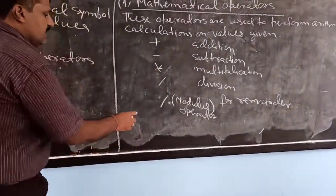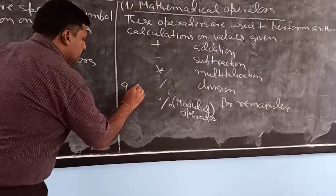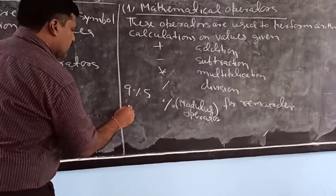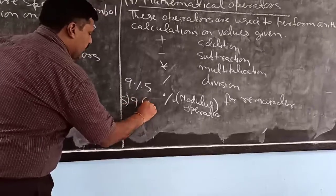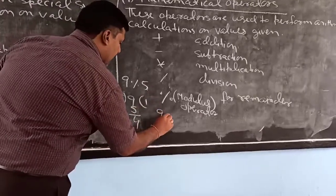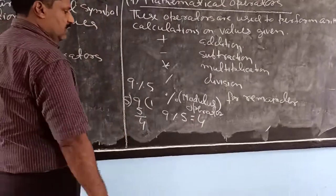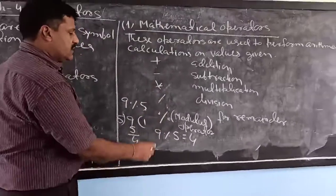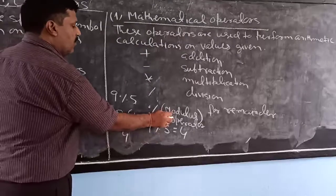The percent sign is the modulus operator and it is used to find the remainder. For example, if I write 9 modulus 5, then 9 is divided by 5 once. So 9 minus 5 gives 4, meaning 9 modulus 5 will give the value 4. There is a difference: the slash divides the number, while the percent sign divides and finds the remainder. The percent sign is called the modulus operator.